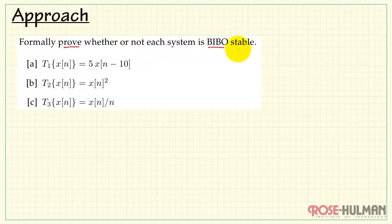Let's take a look at the overall approach. We want to formally prove whether or not each system is bounded input, bounded output, stable. That is, does a bounded input produce a bounded output?